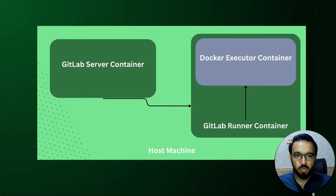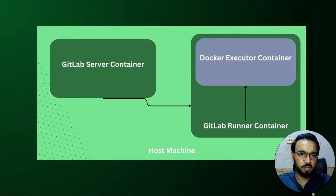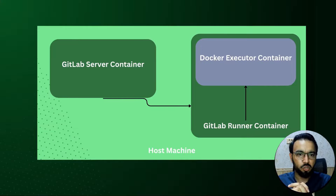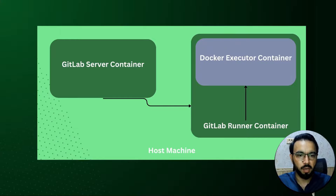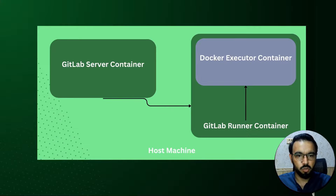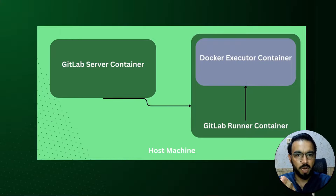In this video, instead of manually registering the Docker executor inside the GitLab runner to process pipelines from the GitLab server, we'll automate this process. So once we have the GitLab server and the GitLab runner, instead of going to the GitLab UI, generating a registration URL, and then logging into the GitLab runner container to run commands manually, we'll automate the whole process using docker-compose.